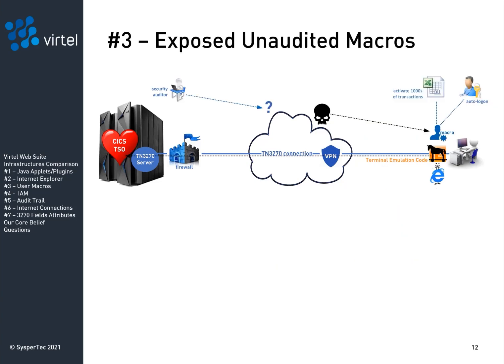Vulnerability number three: exposed unaudited macros. With legacy TN3270 emulators, user-developed macros are stored on the user device. Consequently, they cannot be shared between users or between a user's multiple devices, which leads to unnecessary duplication of commonly used macros. And they cannot be inventoried or audited by the mainframe security team. Yet some users have developed logon macros that contain unencrypted credentials, or macros that activate thousands of mainframe transactions from an Excel spreadsheet or some other file. Think about what could happen to mainframe assets if the user's device got compromised by a cyber attack and the macros fell into the wrong hands.